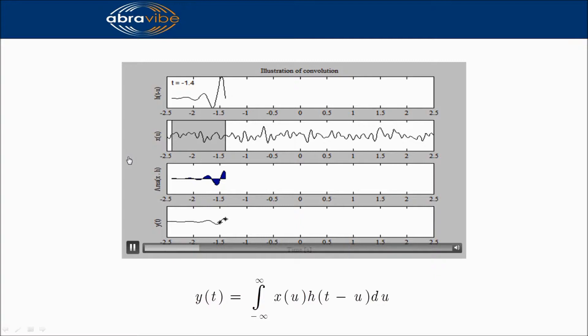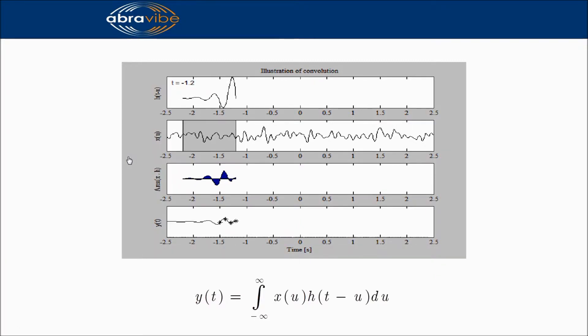For t equals minus 1.4, minus 1.3, minus 1.2, minus 1.1, and then we let it go continuously as the impulse response slides through the data.